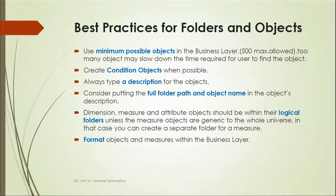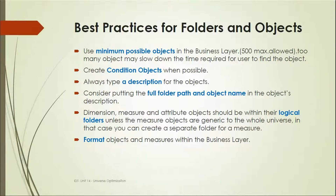Best practices for folders and objects in the business layer: use the minimum possible number of objects — 500 is the maximum allowed, as too many objects may slow the time required for users to find them. Create condition objects when possible to restrict unnecessary data. Always add a description to each object, and consider putting the full folder path and object name in the description. Dimensions, measures, and attribute objects should be within their logical folders, and format objects and measures within the business layer.